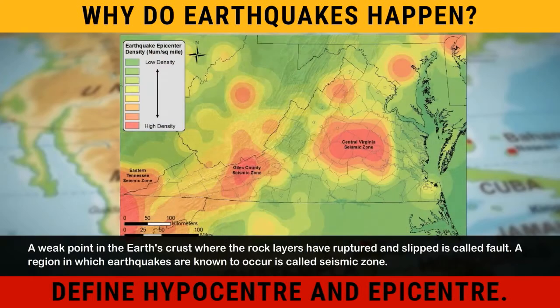A weak point in the Earth's crust, where the rock layers have ruptured and slipped, is called a fault. A region in which earthquakes are known to occur is called a seismic zone.